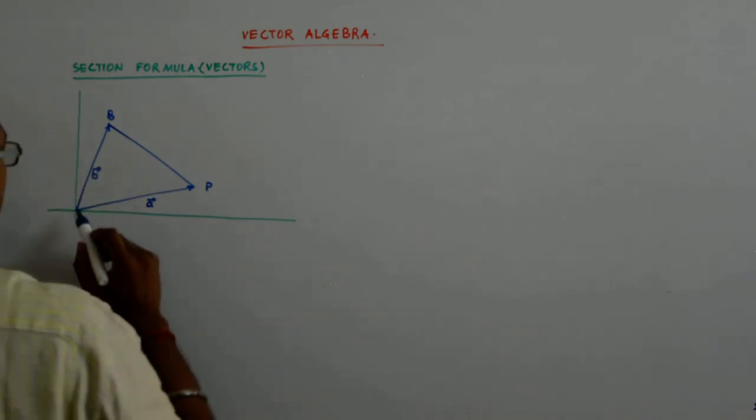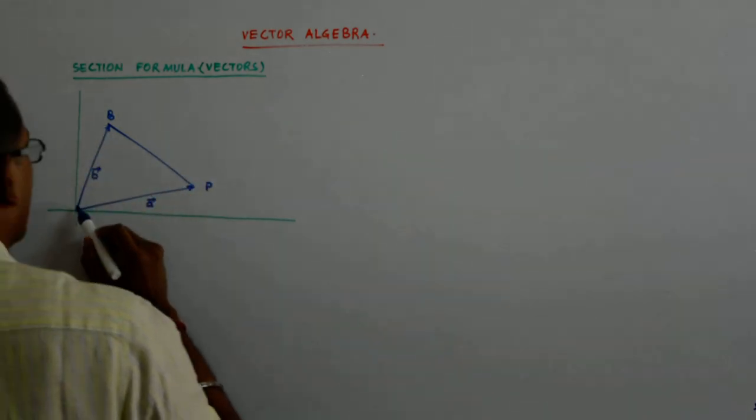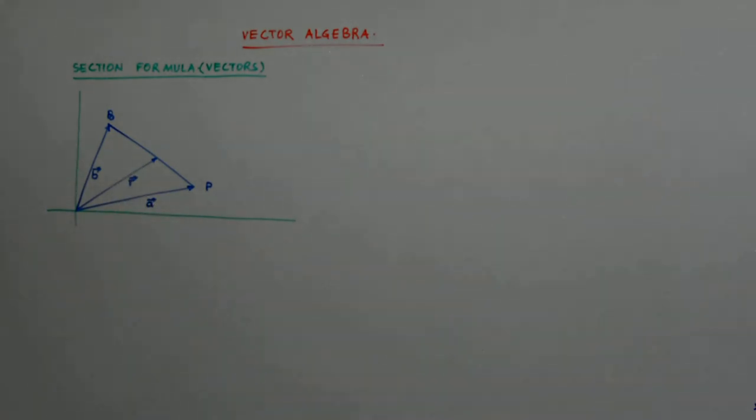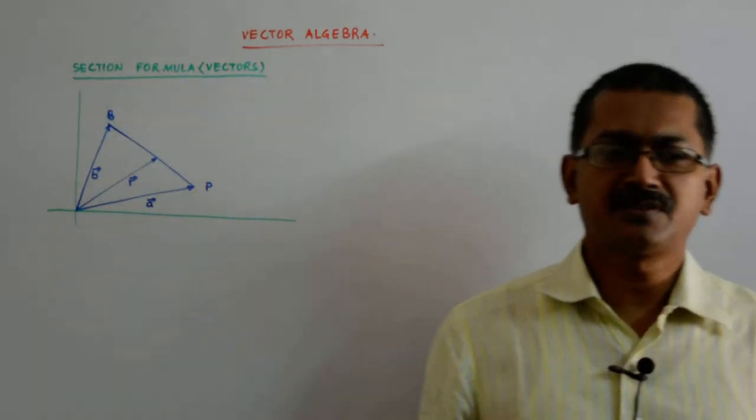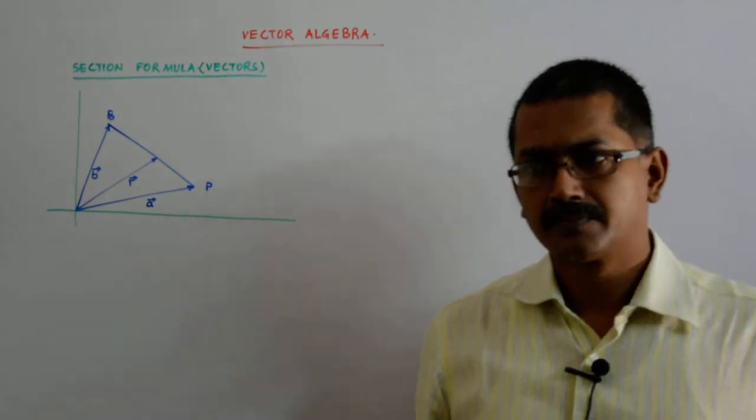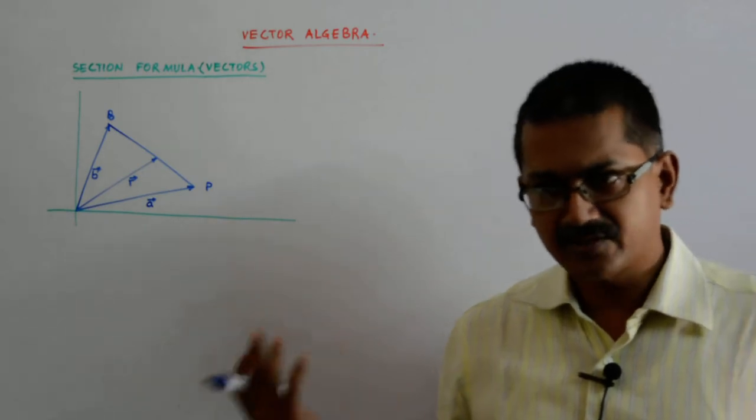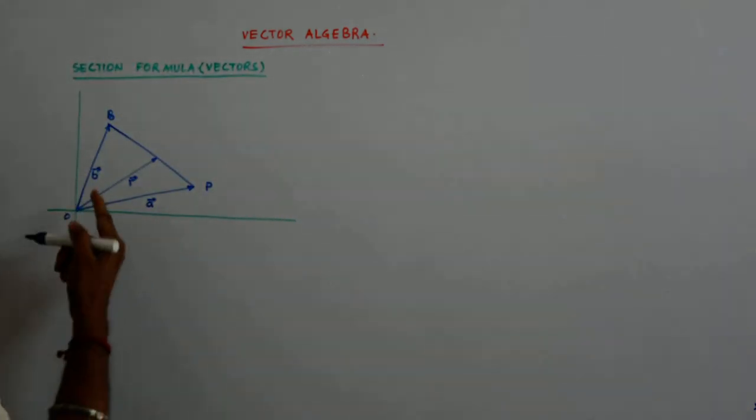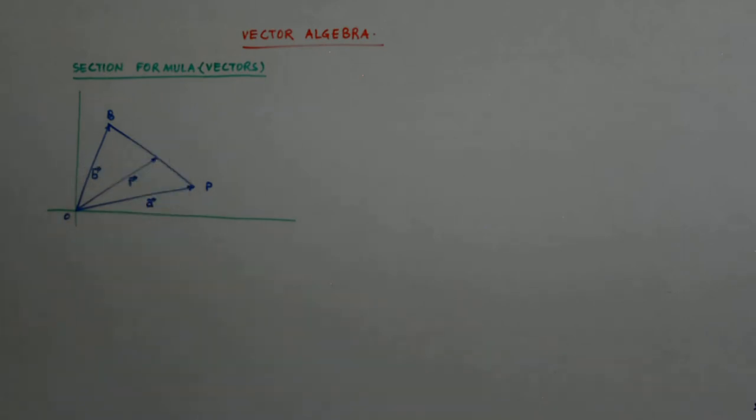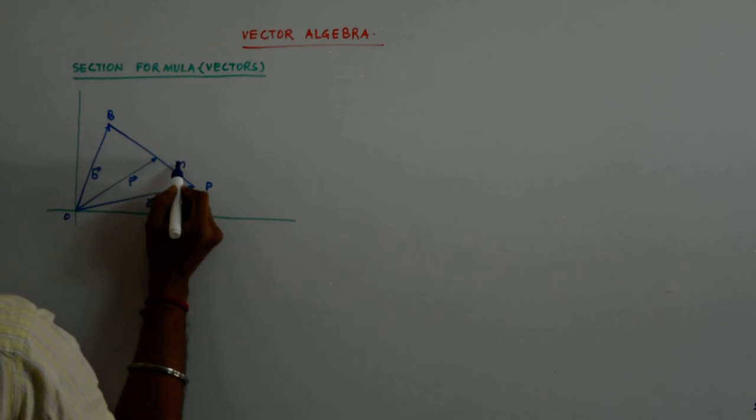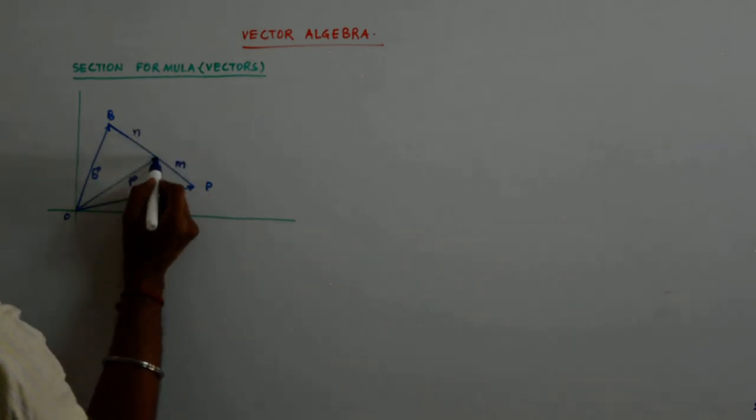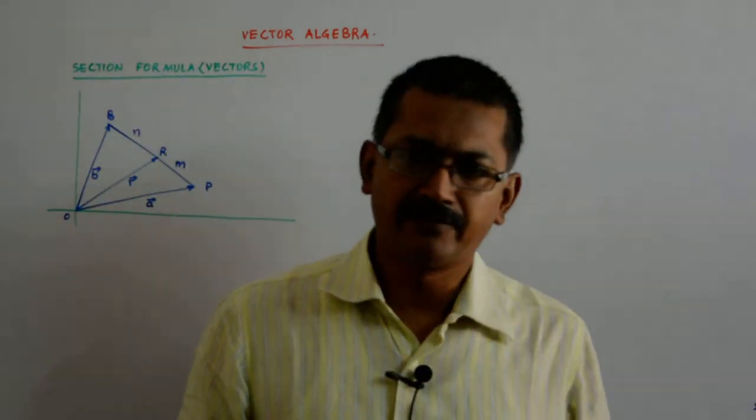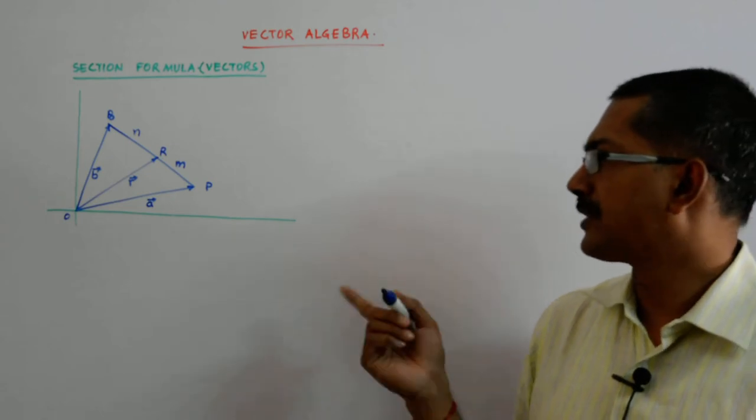I want the, actually you want the same thing. See I want this r, what is the position vector? Because now what happens in vectors, the position vectors they start indicating the points. Earlier the coordinates were indicating the points in the coordinate geometry that we just did. Here what happens, our position vectors start indicating the point and I am stuck with the same problem. What is that position vector at point r that will divide the line segment connecting them in the ratio m is to n?